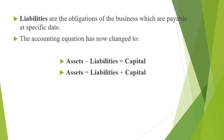We will now discuss liabilities — what are liabilities. Liabilities are the obligations of a business which are payable at a specific date in the future. The accounting equation now changes. Liabilities are obligations to outsiders — for example, if we take a loan which we will pay in the future, that will be the liability of the business, so that will be an obligation of the business.